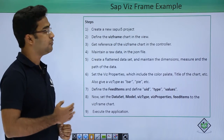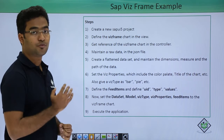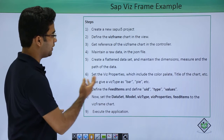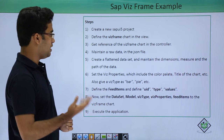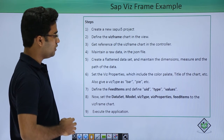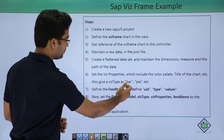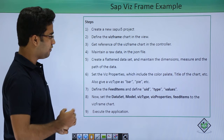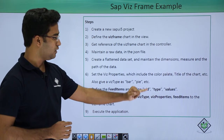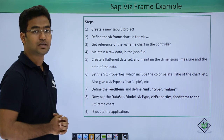Now let us take an example of Viz frame charts. The first step is to create a new SAPUI5 project, then define the Viz frame charts in the view, and get the reference of the Viz frame chart in the controller. Then maintain raw data in the JSON file. When done, create a flattened data set and maintain the dimensions, measures, and path of the data, similarly to Viz charts. What is different here is that we also set Viz properties which include the color palette and title of the chart. We can set the Viz type as bar chart or pie chart, define feed items with UID, type, and values. Finally, set the dataset, model, Viz type, Viz properties, and feed items to the Viz frame chart and execute the application.